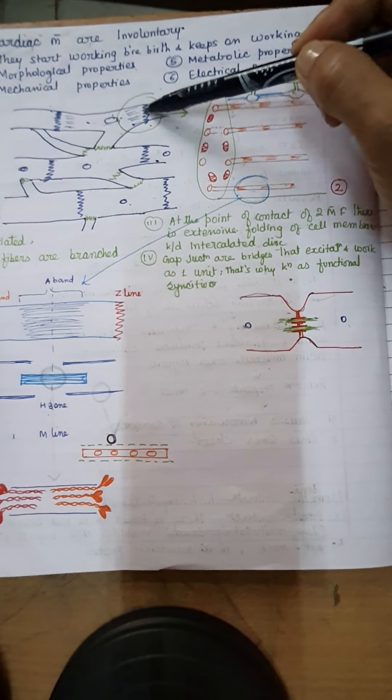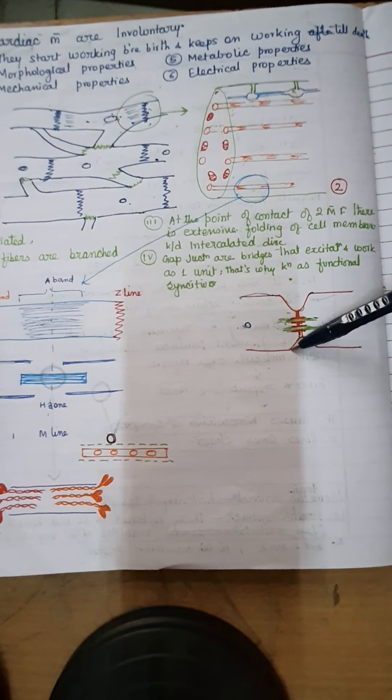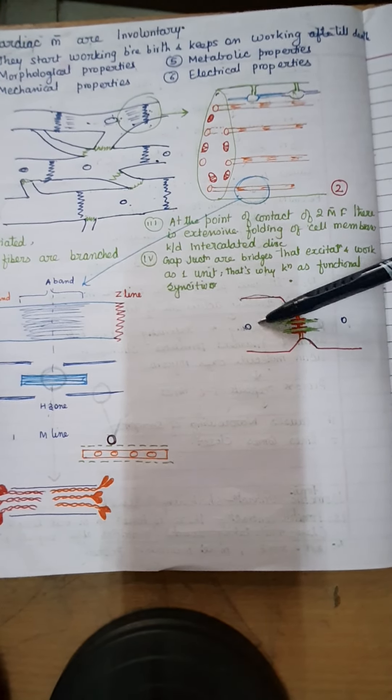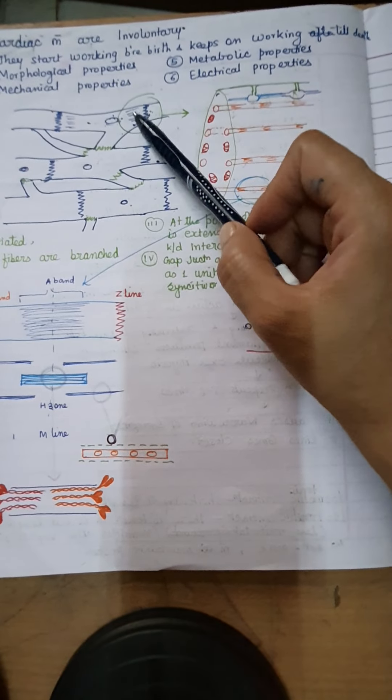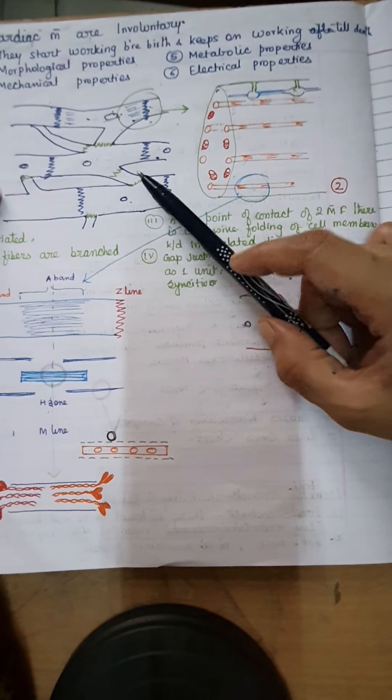To summarize the morphological properties: first, they have a single nucleus placed in the center of the cell. The cells are connected to one another through intercalated discs, which are actually folded sarcolemma. Within the intercalated disc there are gap junctions that cause interchange of ions from one cell to another. There is also the presence of branches and striations within the muscle fibers.